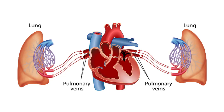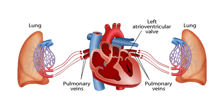From the left atrium, blood flows through a one-way valve called the left atrioventricular valve, also known as the bicuspid valve, into the left ventricle. Most of this flow, roughly 70%, occurs while the heart is relaxed. The atrium then contracts, filling the remaining 30% of the ventricle with its blood.